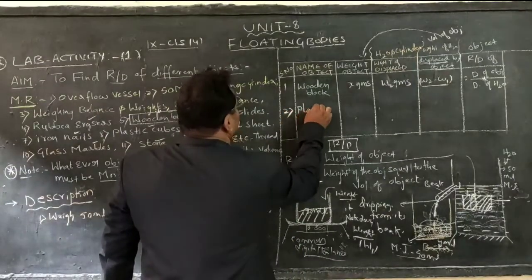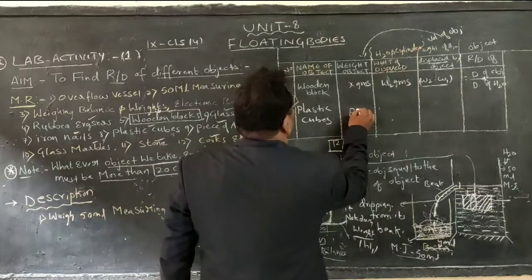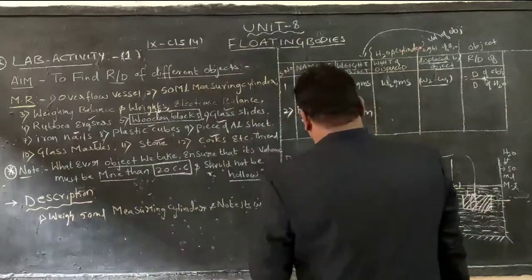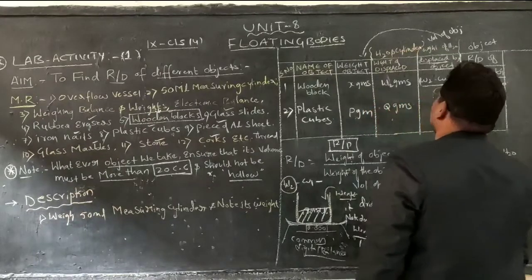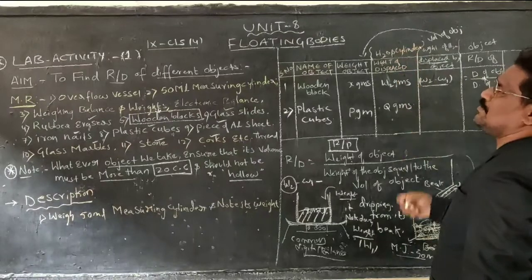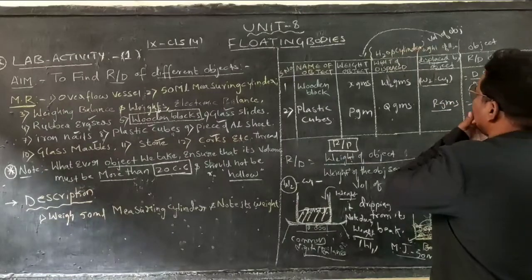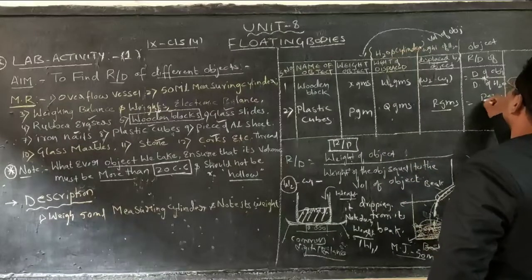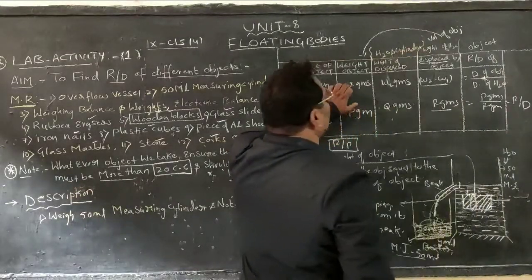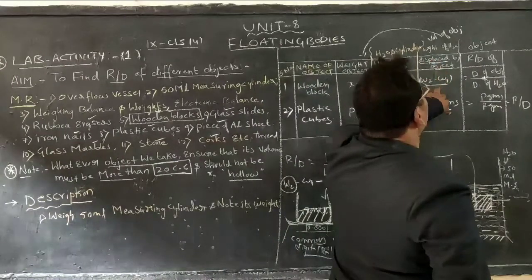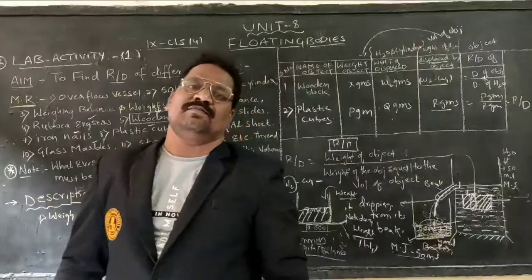Next, take one more article — plastic cubes. The weight of the plastic cube is P grams. The weight of the empty measuring jar is Q grams (W1), and the weight of the jar with displaced water is R grams (W2). So the weight of water displaced is R minus Q grams. Relative density equals weight of object divided by weight of water displaced, which is P divided by R grams.